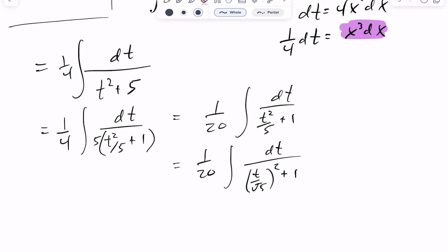Now I'm going to do a second substitution. I'm going to let u equal t over the root of 5, in which case du is going to be 1 over the root of 5 dt. So I can rewrite that dt as root 5 du.